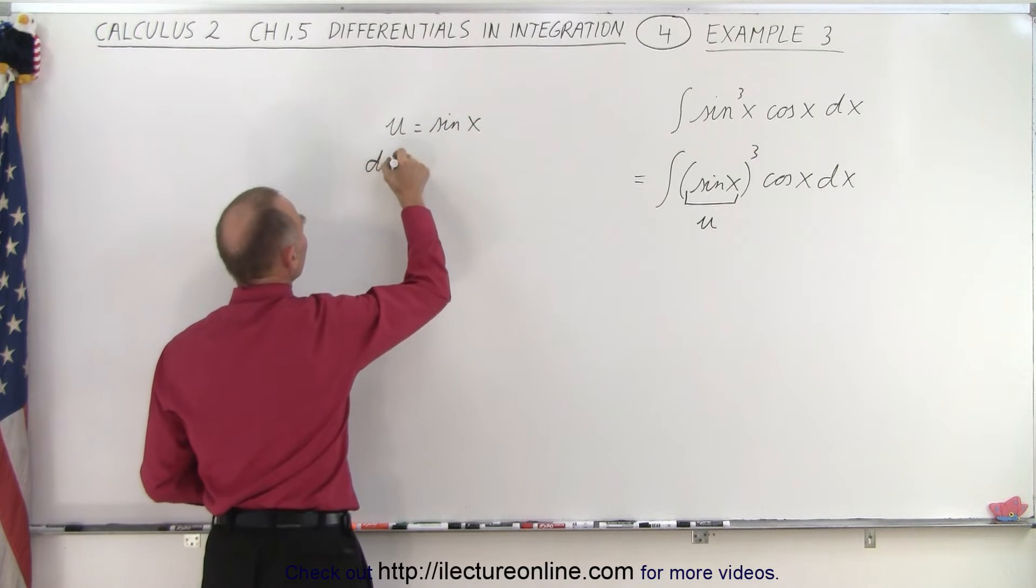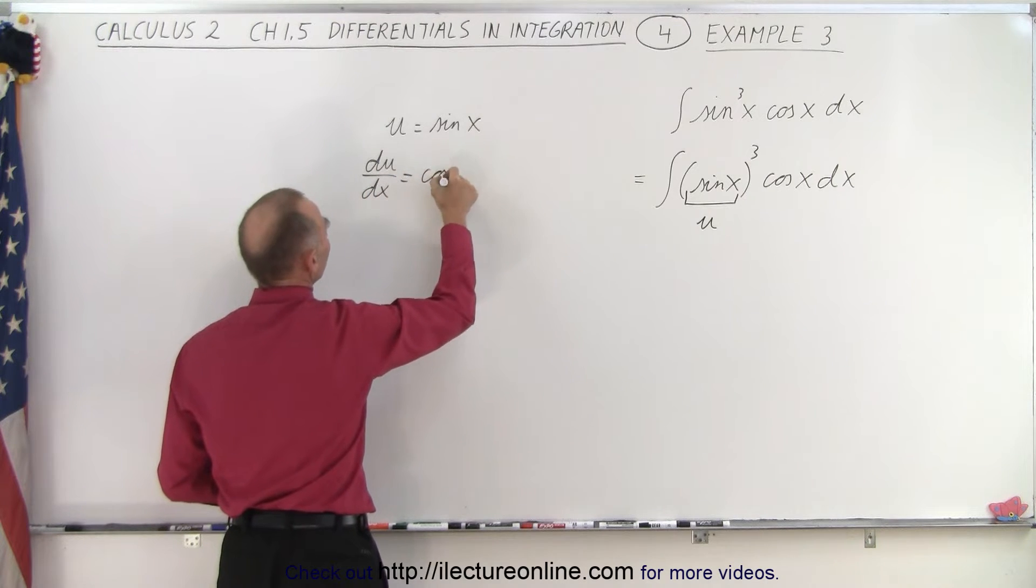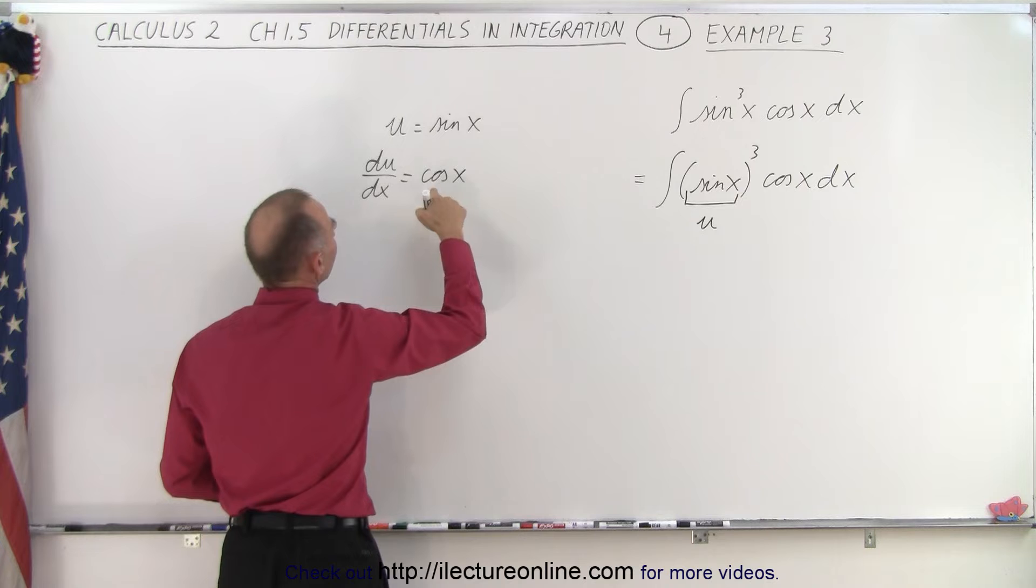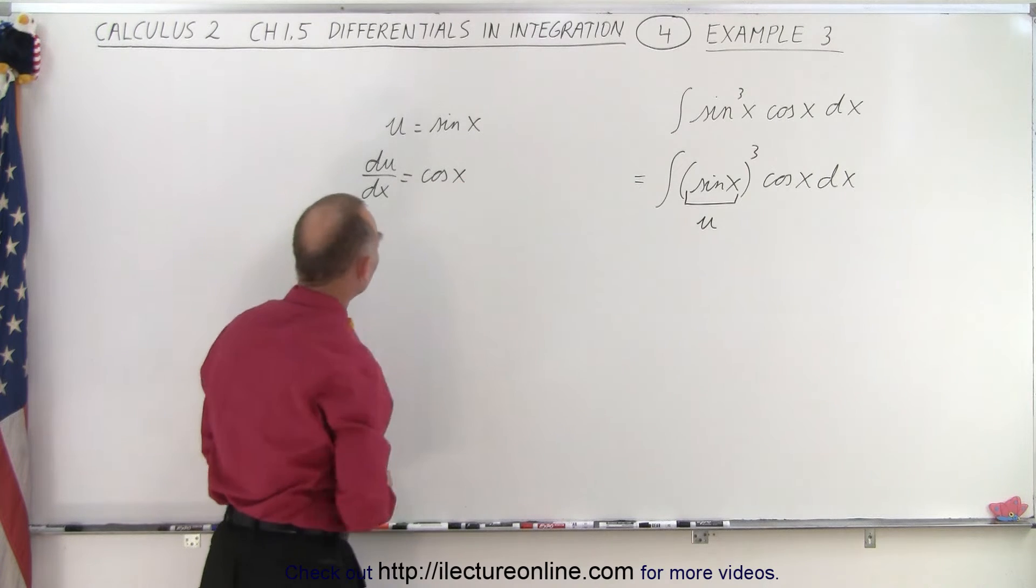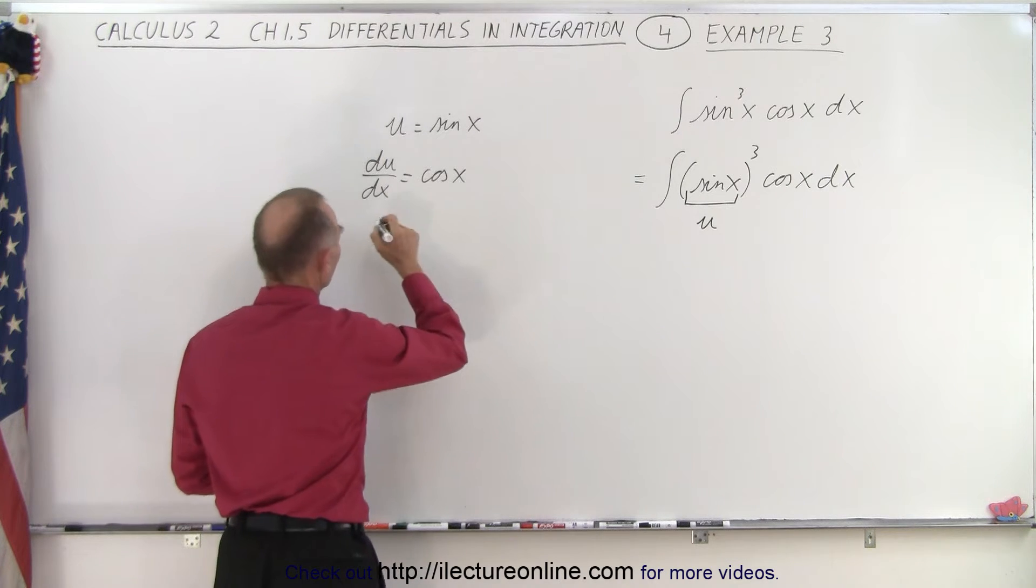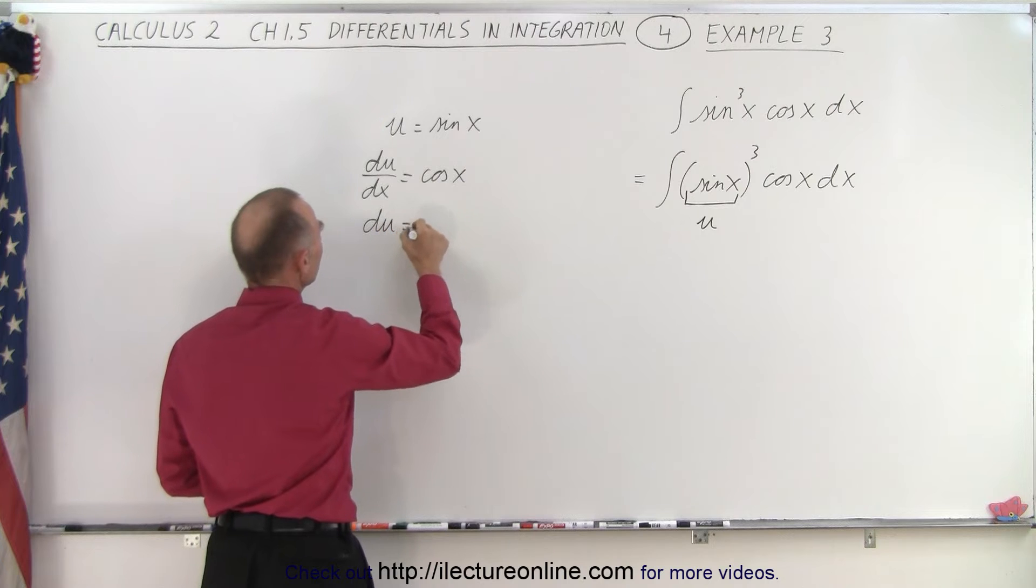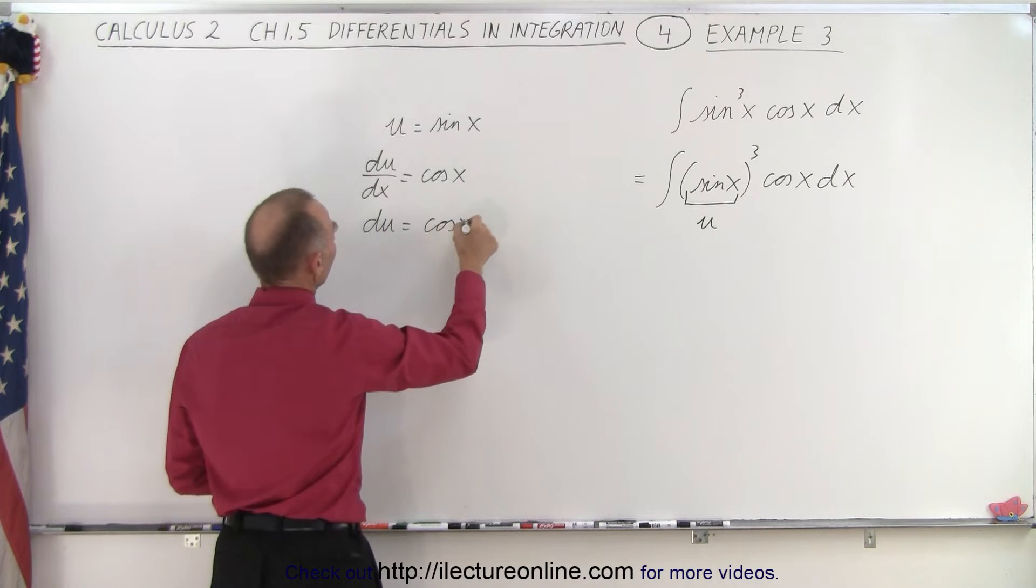Then du/dx, the derivative of u with respect to x—well, the derivative of sine is the cosine of x times the derivative—oh no, that's it—just the cosine of x. Then we move the dx across so we get du equals the cosine of x times dx.